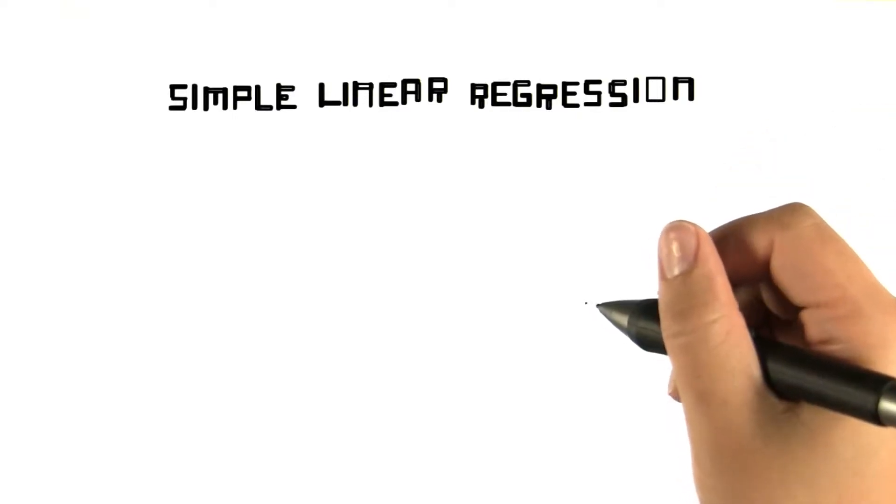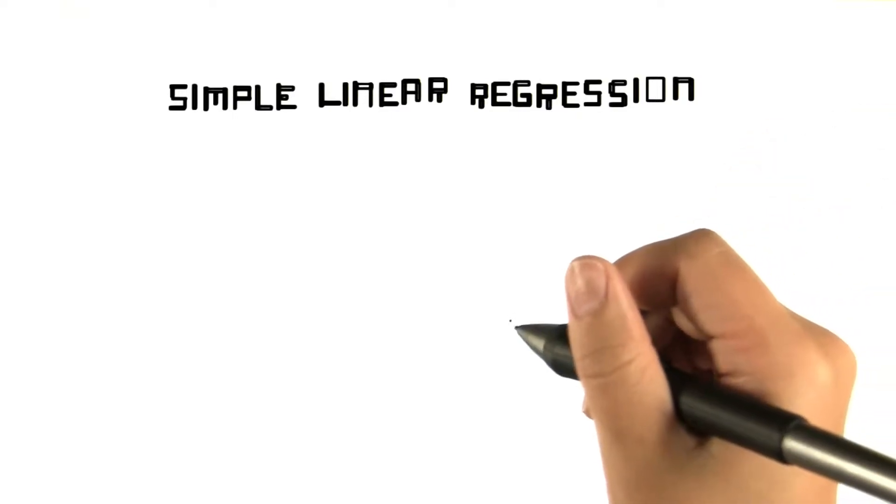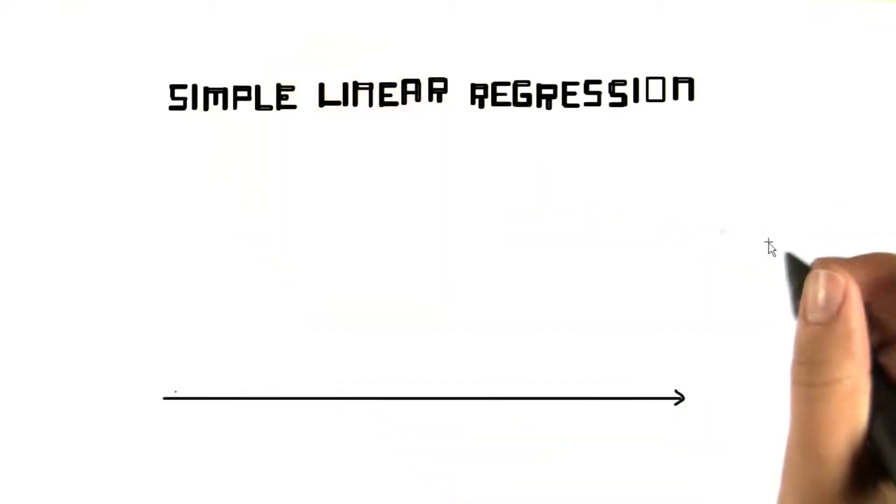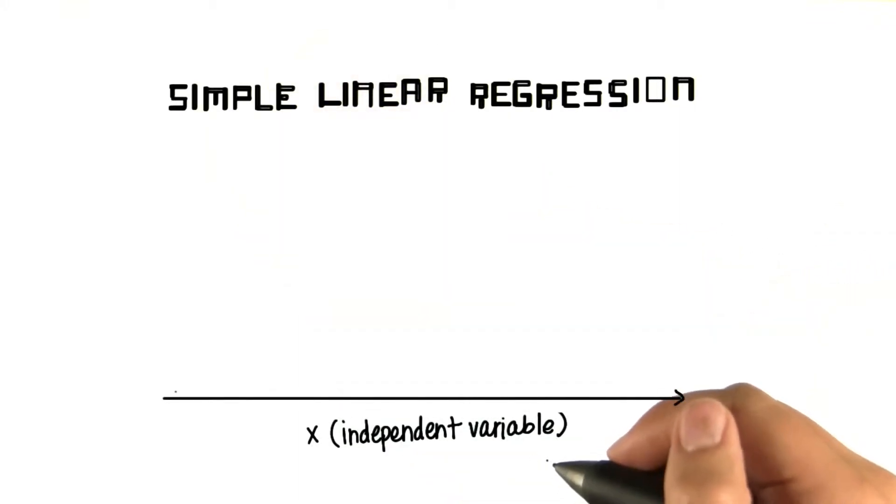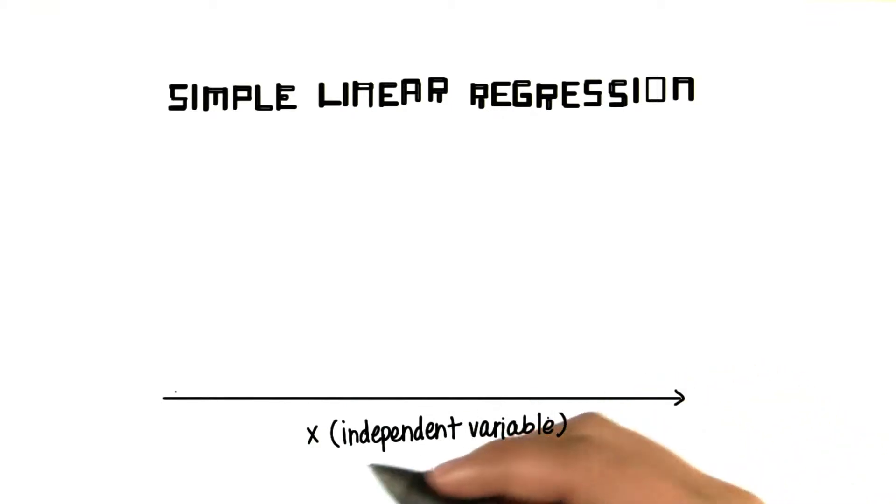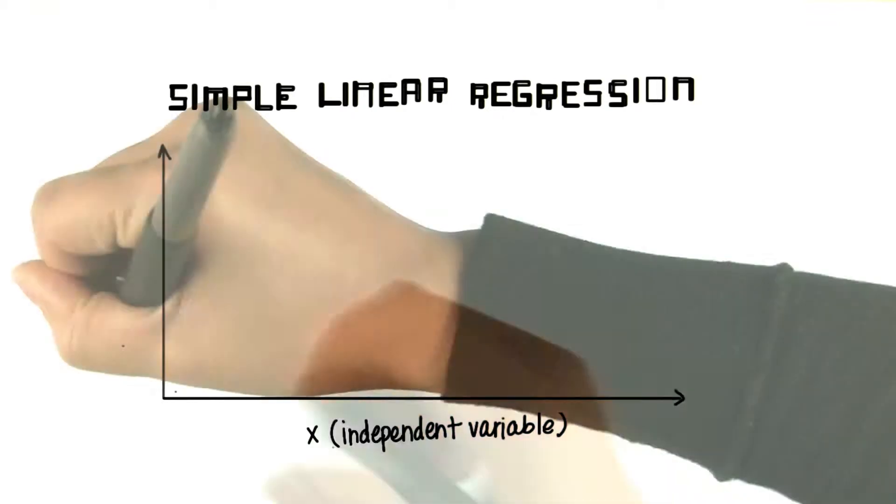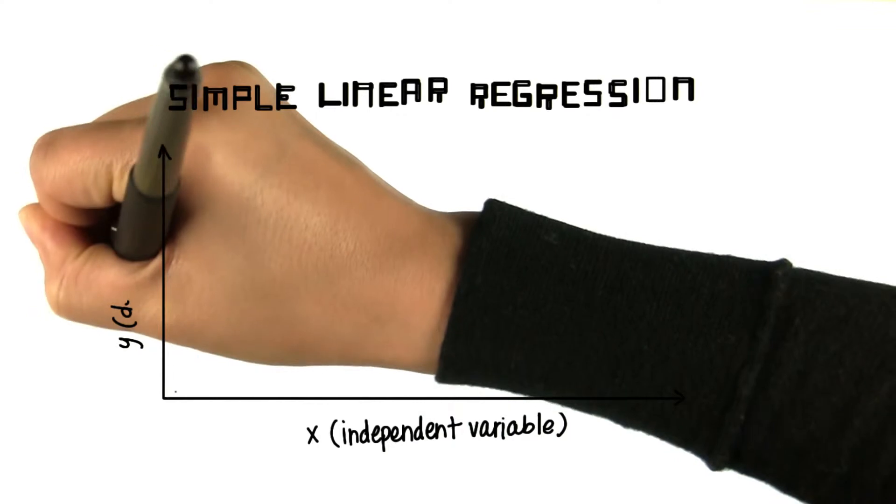We're pretty much done with the lesson now, so we're just going to recap some key concepts that you learned. Simple linear regression is when we look at the relationship between an independent variable, which we often symbolize by x, and a dependent variable, which we symbolize by y.